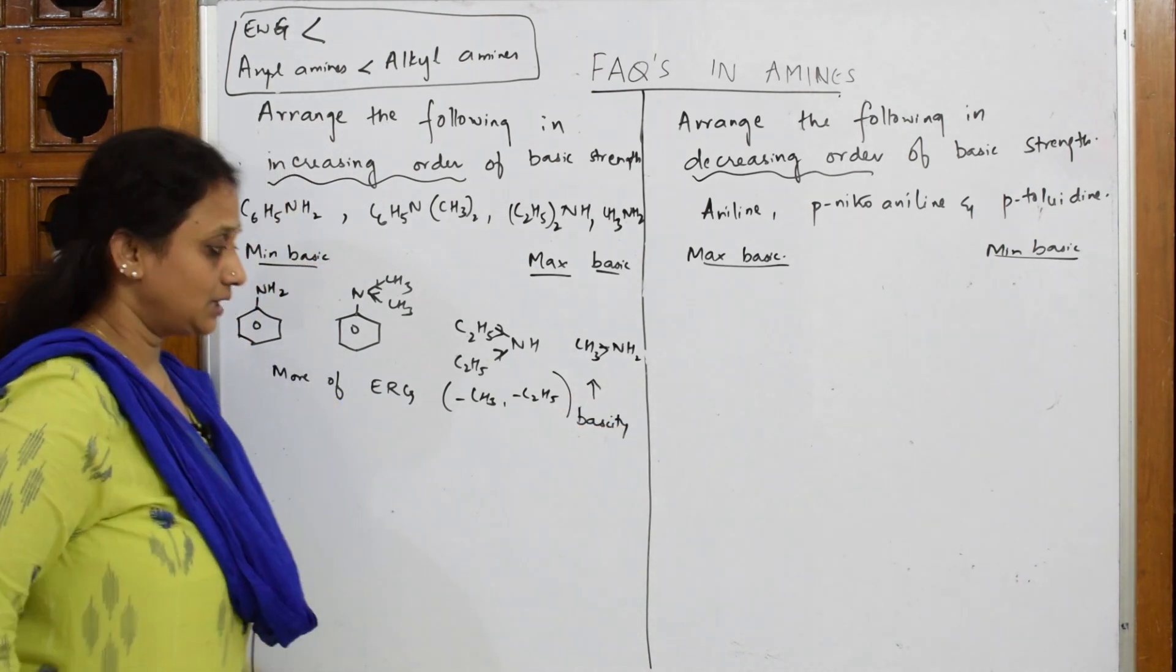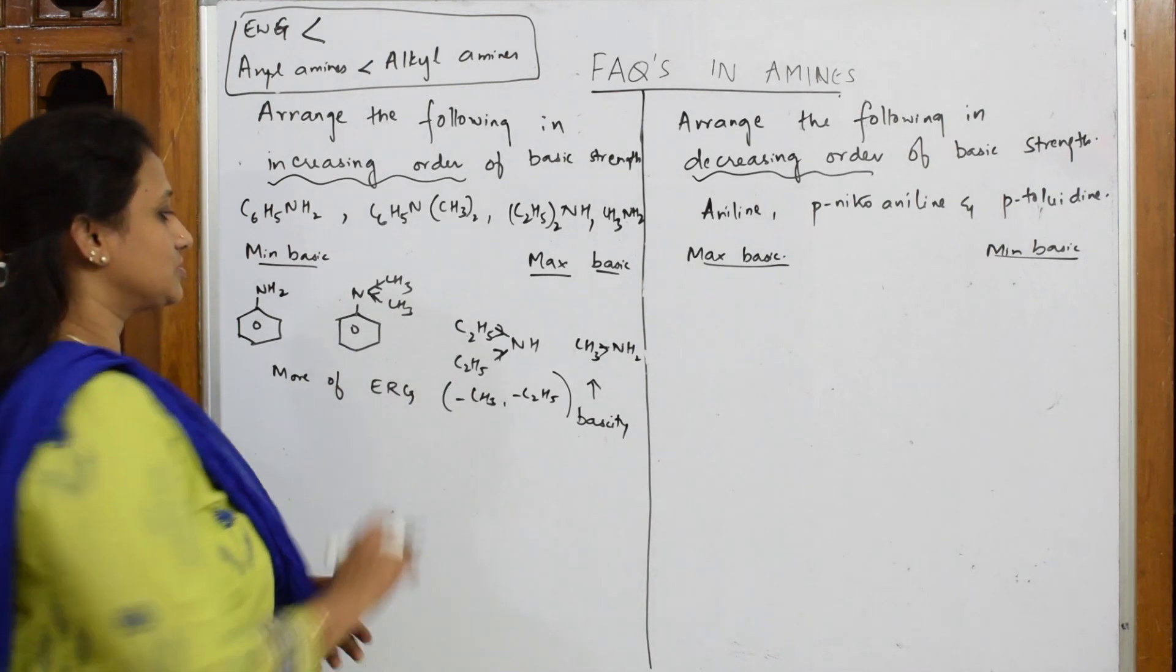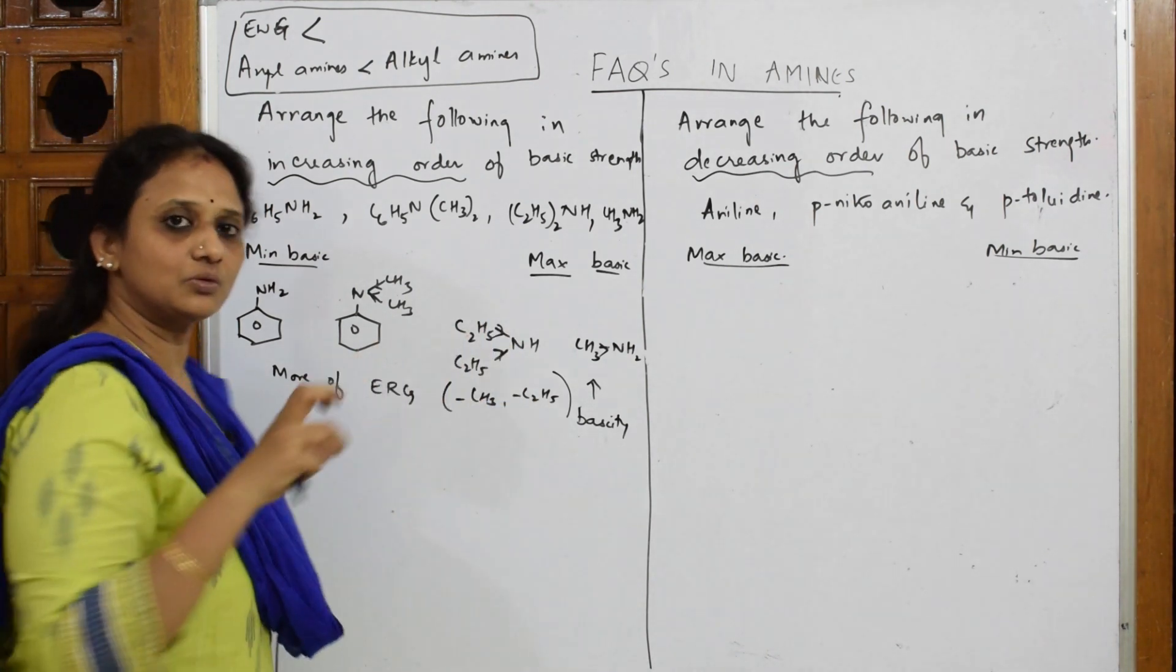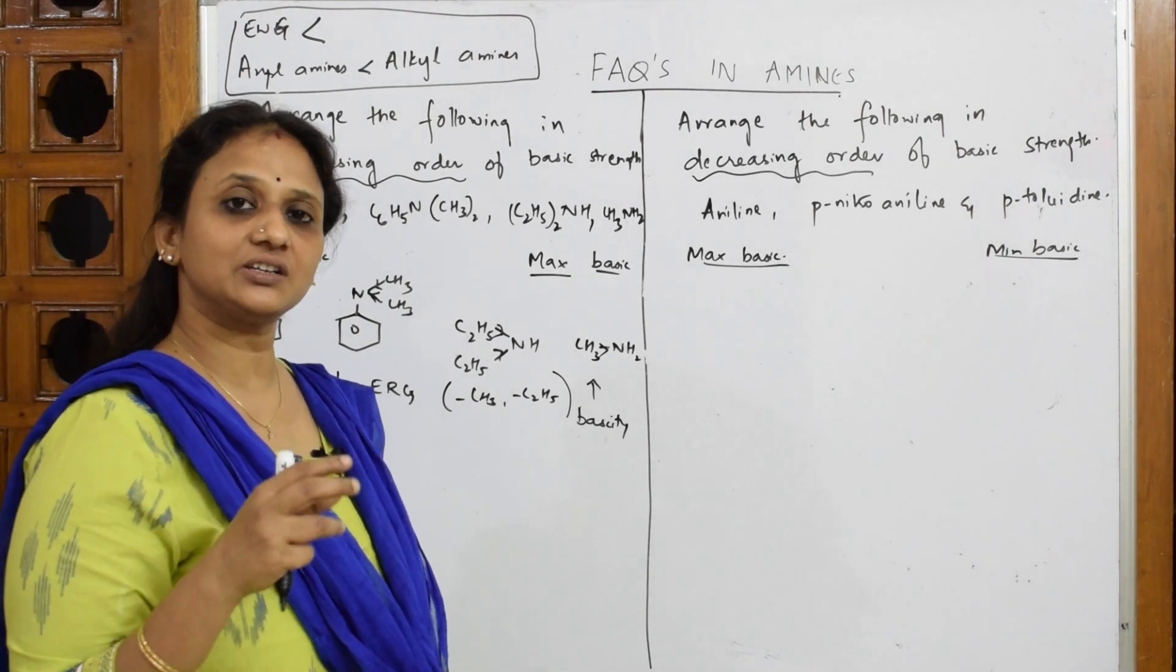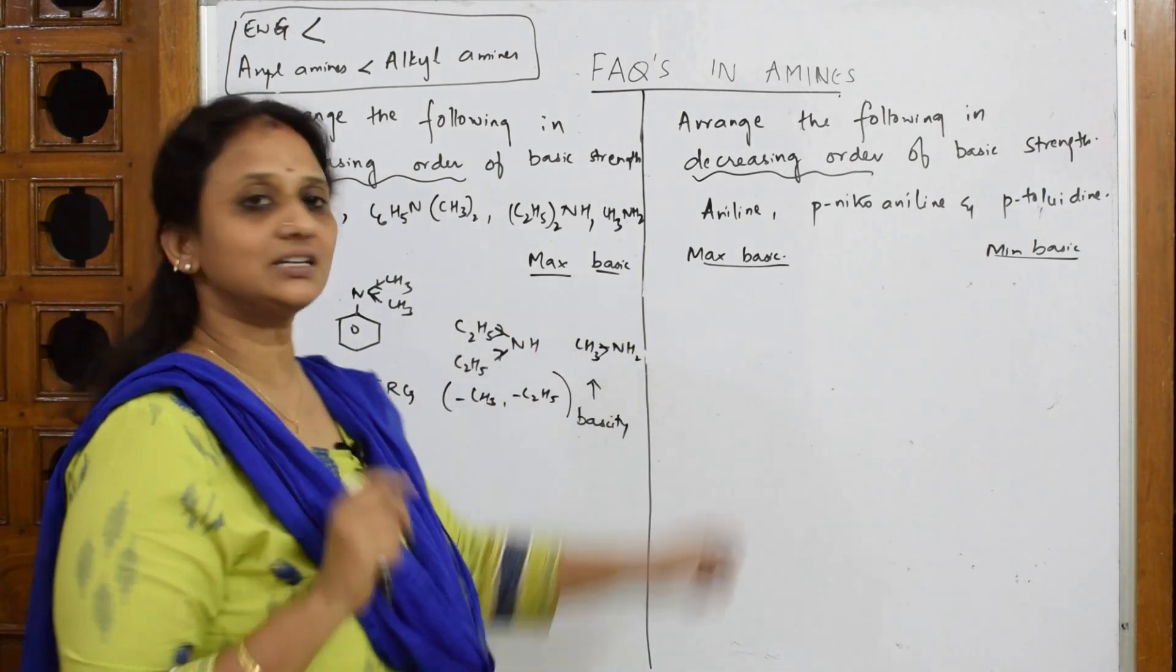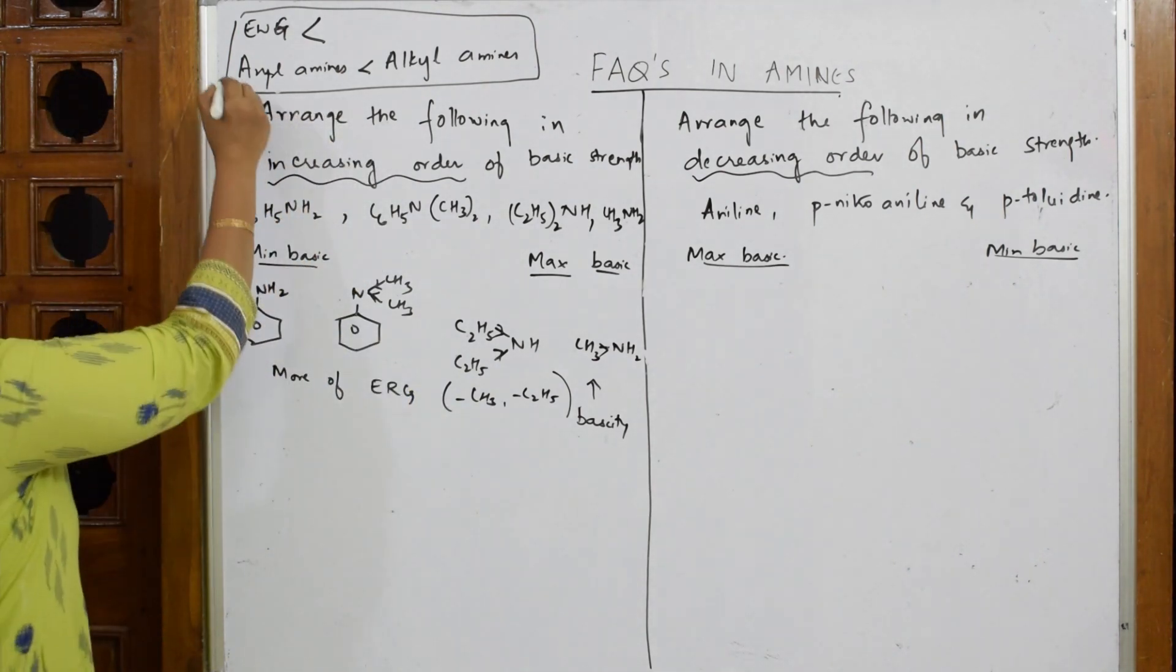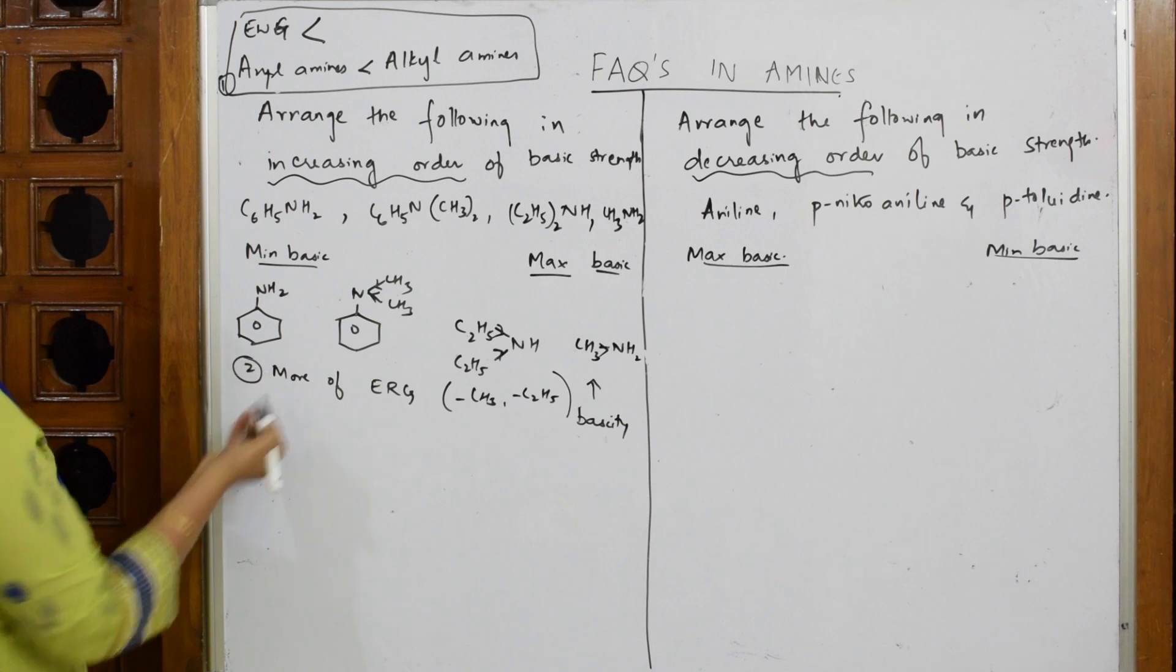This is your concept. Because they keep on donating electrons, this will donate, this will also donate. The whole electron density increases on nitrogen so that you can easily donate the electron and become more basic. This is the concept. Now let us come back